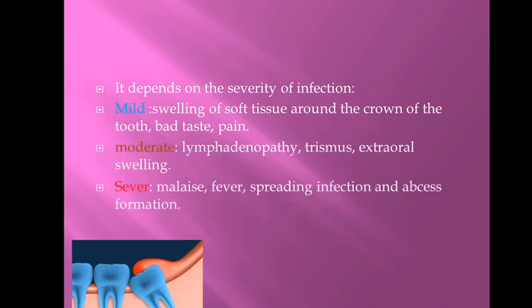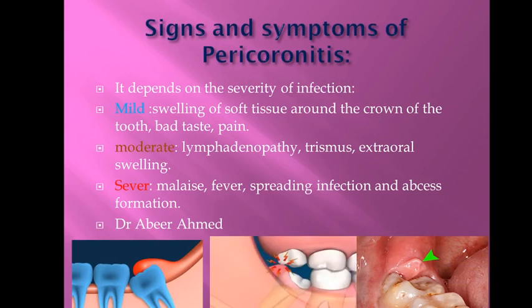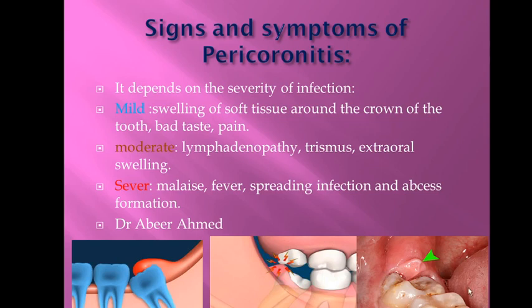The signs and symptoms of pericoronitis depend on the severity of infection. There are three levels: mild, moderate, and severe. In mild infection, the patient presents with swelling of the soft tissue around the crown, bad taste, and pain due to infection around or under the operculum. In moderate infection, the patient presents with lymphadenopathy, trismus, and extra-oral swelling — they cannot open their mouth properly.